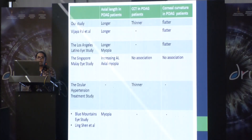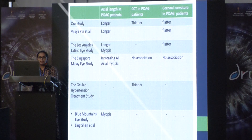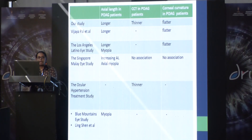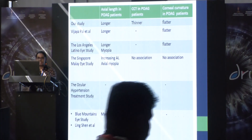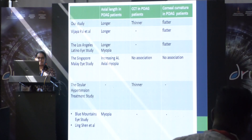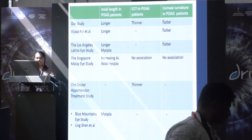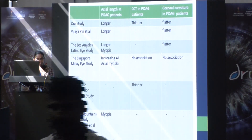Coming to discussion: in this study it was found that longer axial length, thinner central corneal thickness, and low average K value were found in primary open angle glaucoma group patients when compared to the control group. These results were almost similar to results by Vijayapai et al. and the Los Angeles Latino Eye Study, except that those studies did not evaluate central corneal thickness.